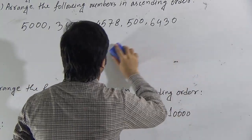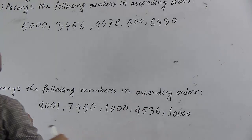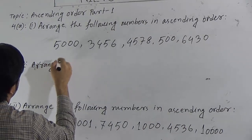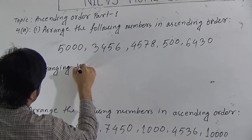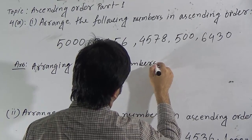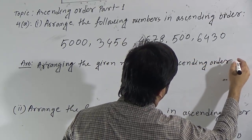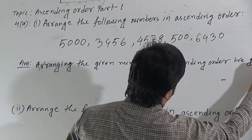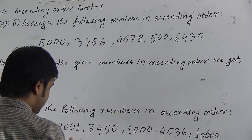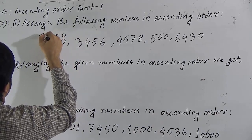I have written some numbers here — I have written two questions. In the first question there are five numbers. I will arrange these five numbers in ascending order. Arranging the given numbers in ascending order. At first, we have to indicate each position of the digits in the numbers: ones place, tens place, hundreds place, and thousands place.